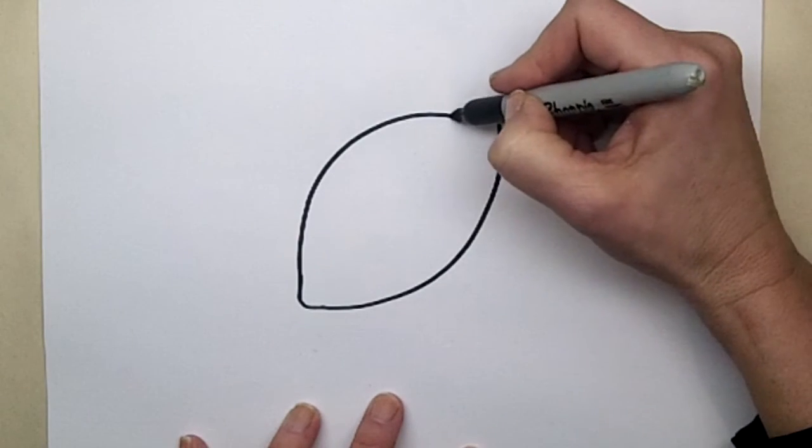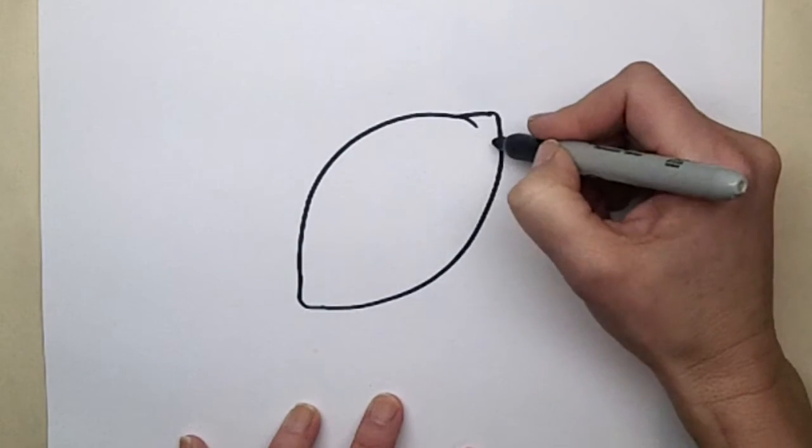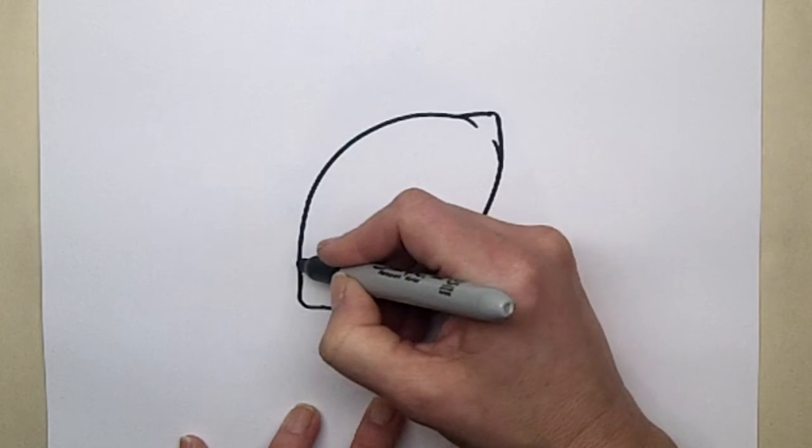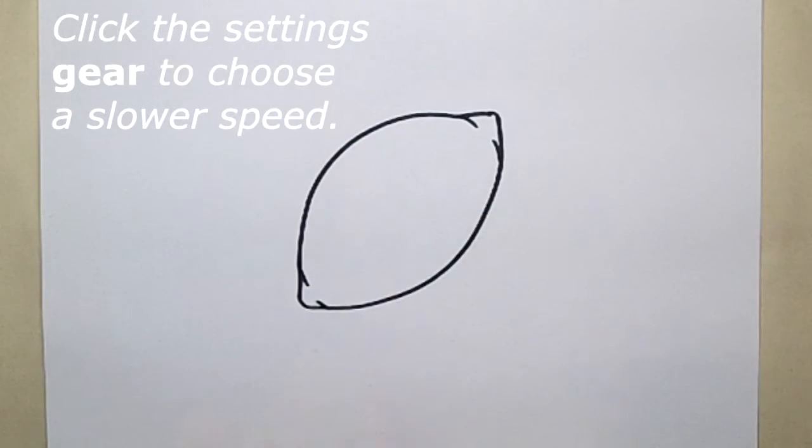And then you can maybe even draw these lines, kind of making it look as if that part sticks out a little bit on the lemon, because it often does.